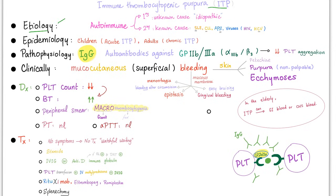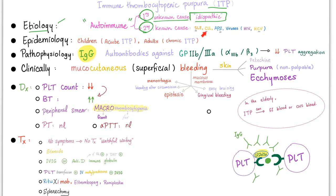ITP etiology: it could be unknown — we call this primary ITP, meaning idiopathic. Either way, we have IgG antibodies. Secondary ITP has a known cause — it's secondary to something else such as lupus, CLL, antiphospholipid syndrome (APS), or viruses such as HIV and hepatitis C. Remember: it's hepatitis B or C — it's hepatitis C for ITP.